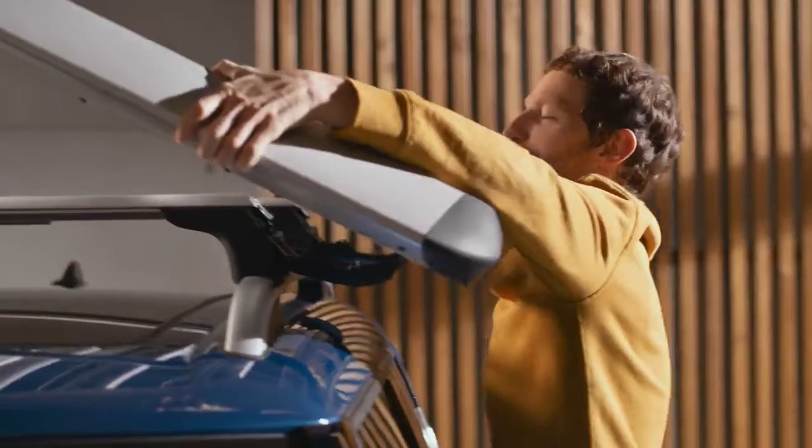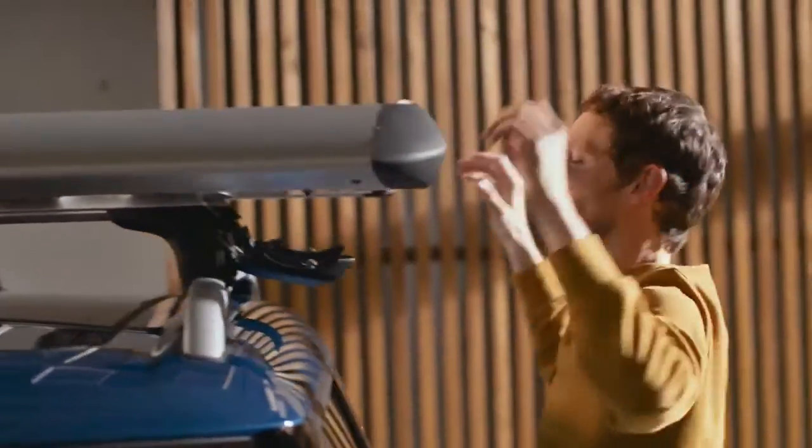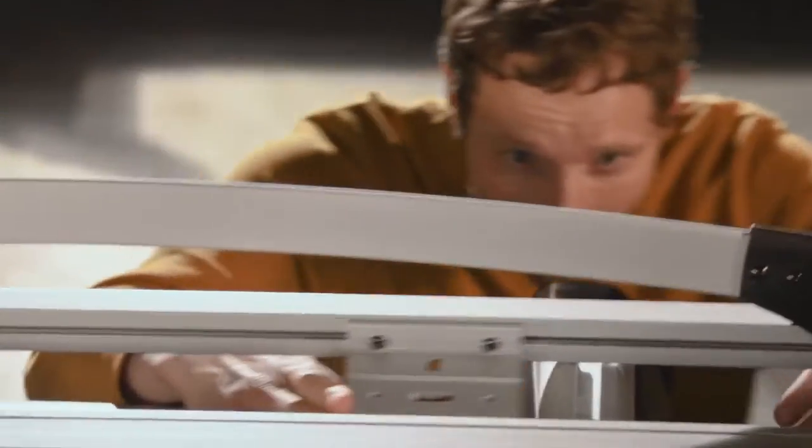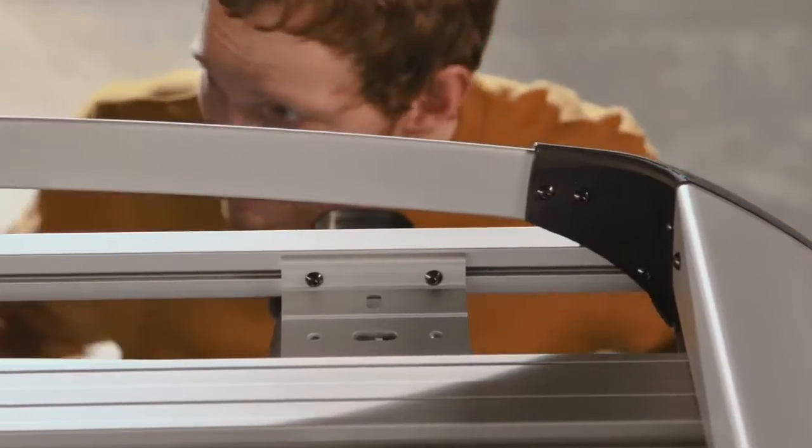Lift the luggage basket onto the roof and place it centrally from the side. Adjust all mounting plates to the roof carrier position.